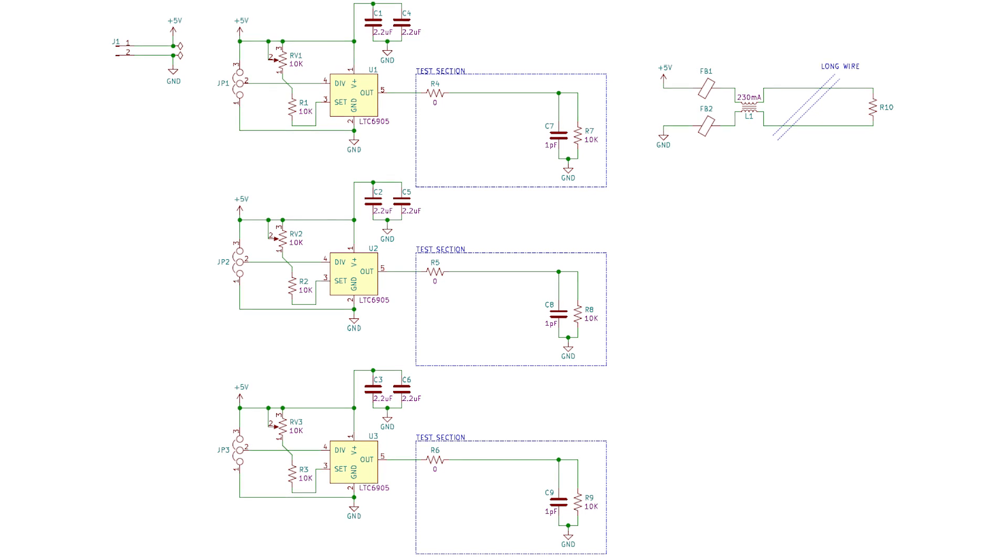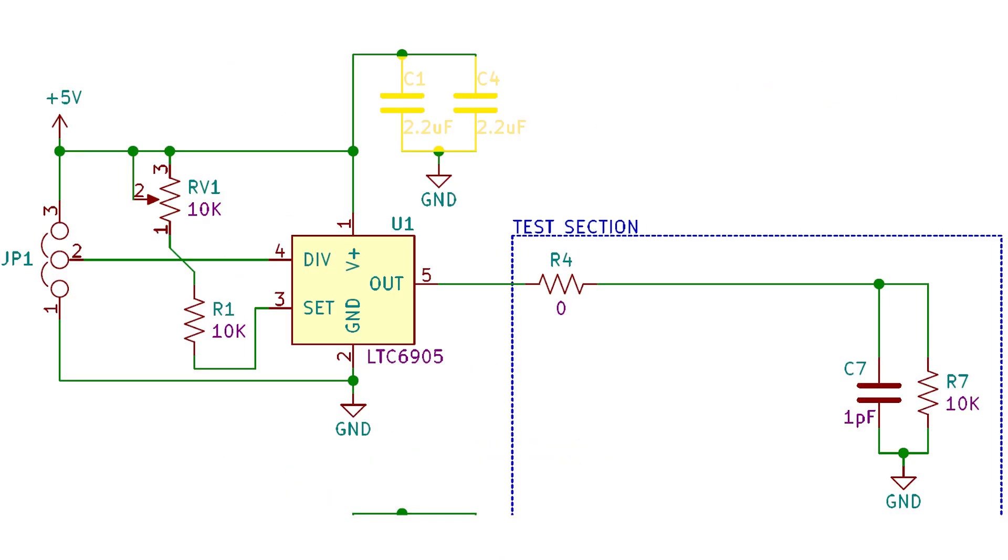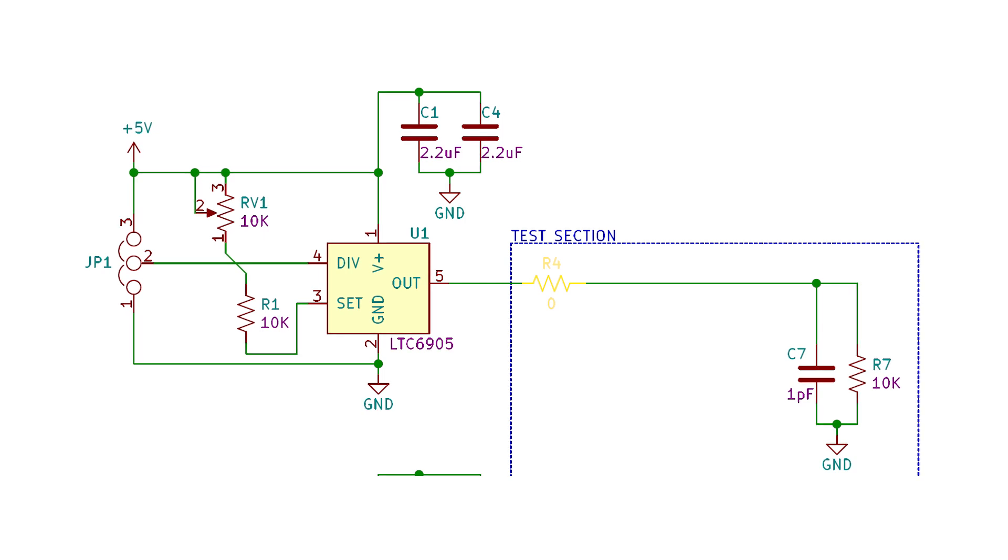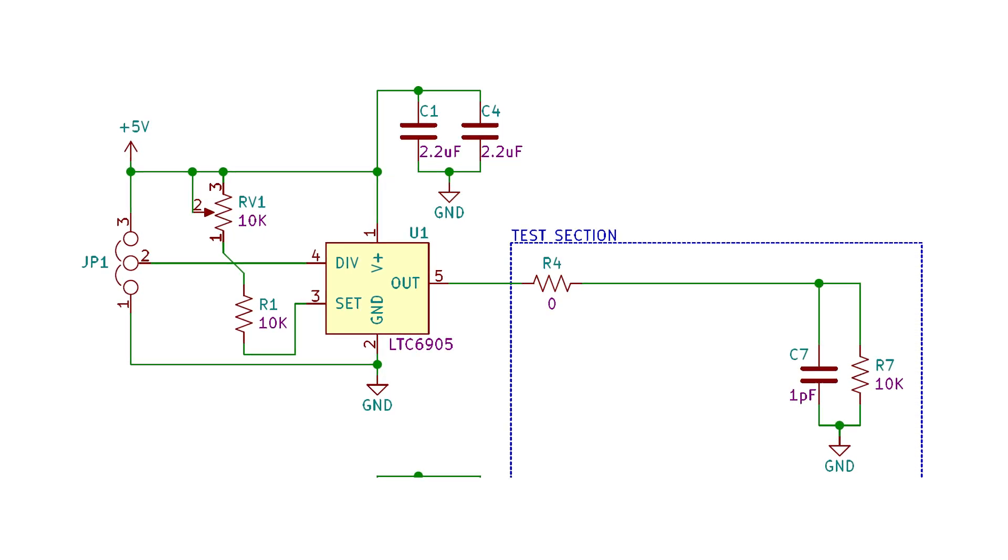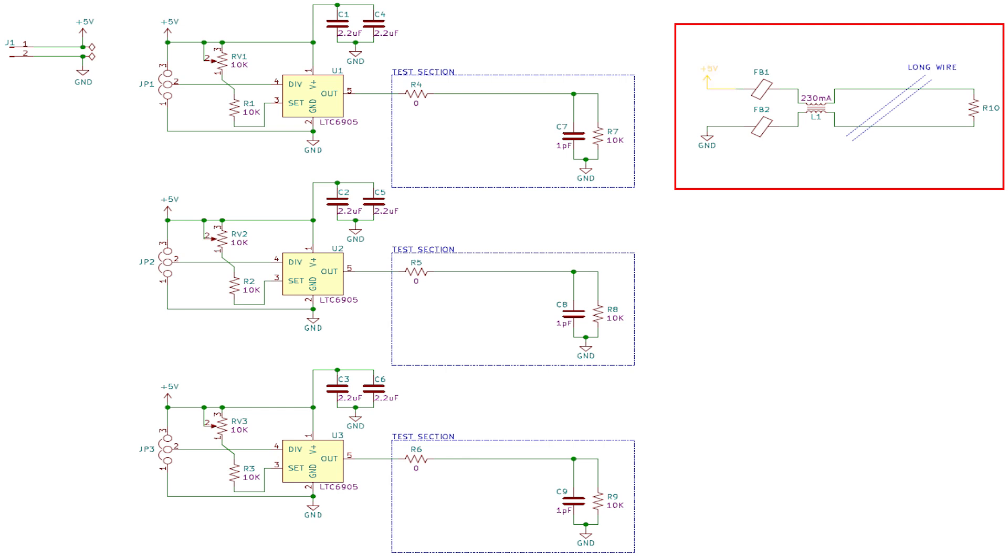The schematic for the test board is quite simple. It has three identical blocks, all based on the LTC6905. Each block has two 2.2 microfarad 0402 decoupling capacitors, an adjustable jumper on the divide pin, and a voltage divider on the set pin. I thought this was the adjustable master clock version, so that's why the divider is there. I ended up just shorting it out and removing the potentiometer altogether. The output pin goes through a series resistor that we can use to adjust the rise time of the signal. It then drives a 10k resistor in parallel with a 1 picofarad capacitor. To test the common mode currents that are coupled to a stray wire on the board, I also included a single wire with 5 volt and ground, leaving the board through a differential and common mode filter.